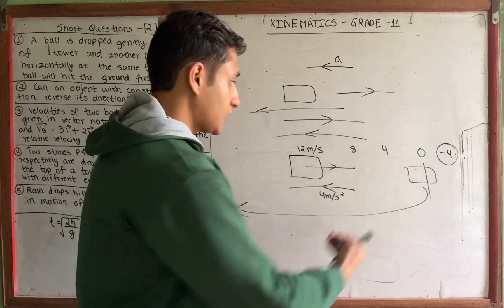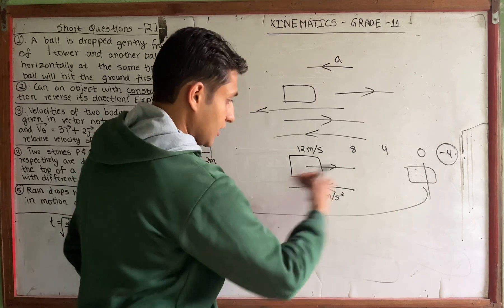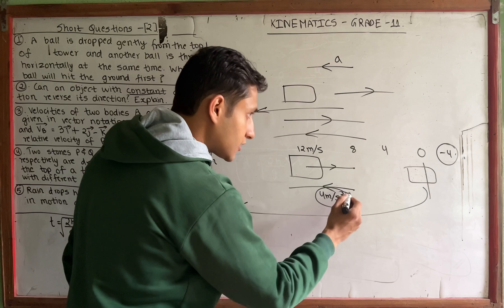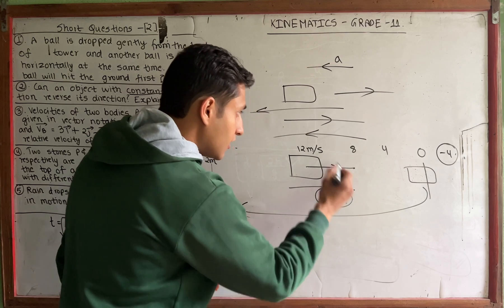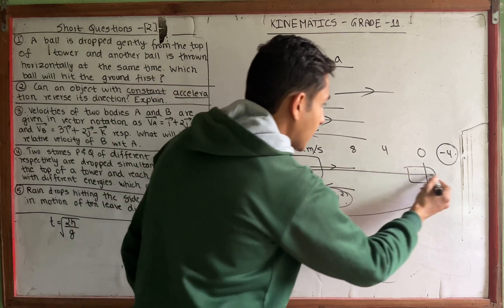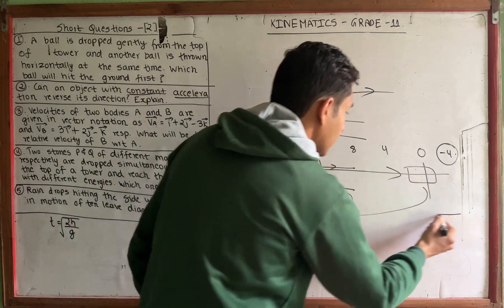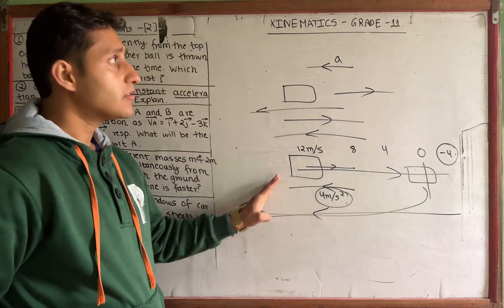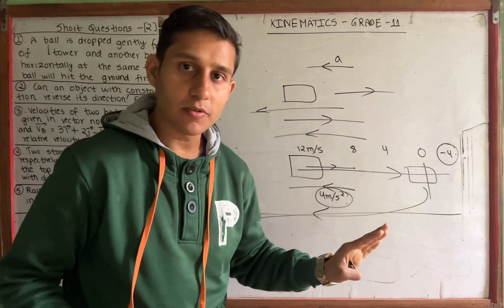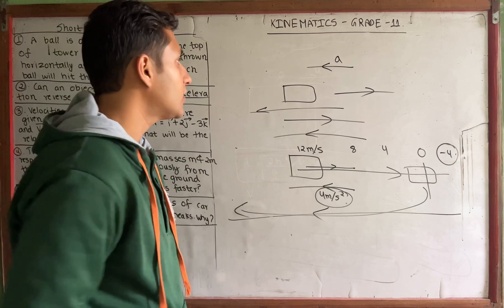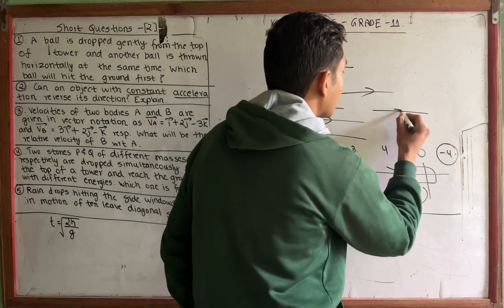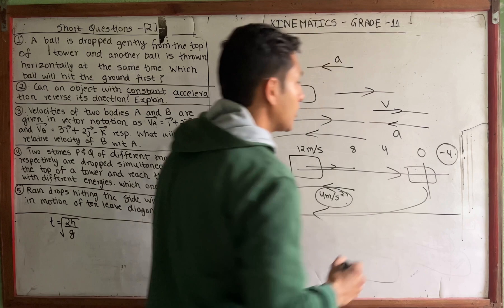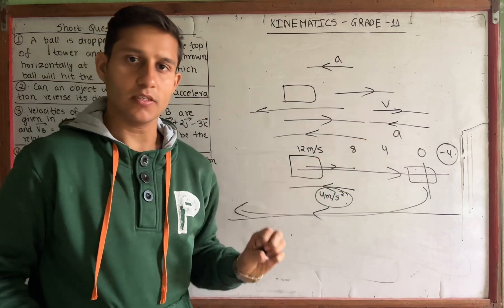The acceleration is in the negative direction, opposite to the initial velocity. So it is very possible — if an object has velocity in one direction and acceleration in the opposite direction, it will reverse its direction of motion.